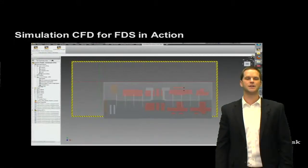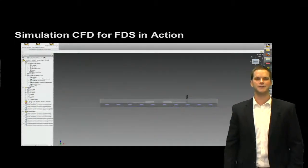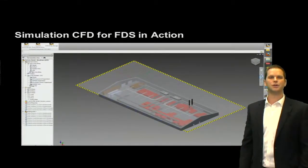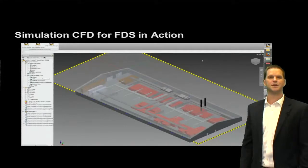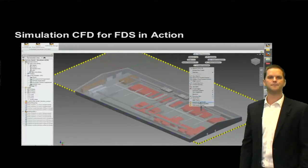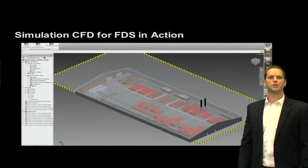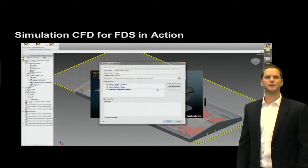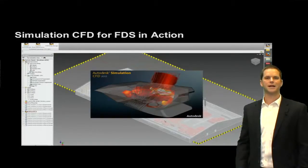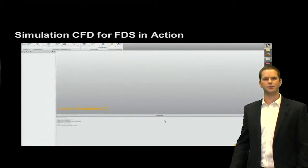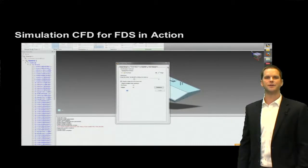Let's look at Simulation CFD plus FDS in action. This is a really nice overview video showing how this works. This is a model of a factory in Inventor. We can see that the machines are in red, and the ventilation system is in gray. We leverage the CAD connection between Inventor and Simulation CFD to pull an exact parametric representation of this geometry into Simulation CFD. You're able to reuse the native data directly out of Inventor.